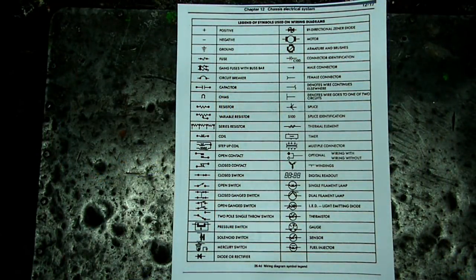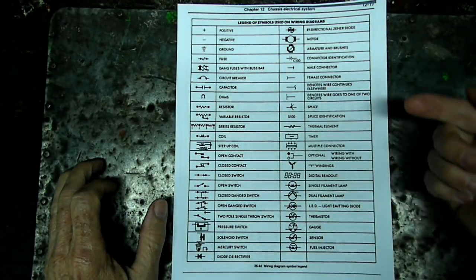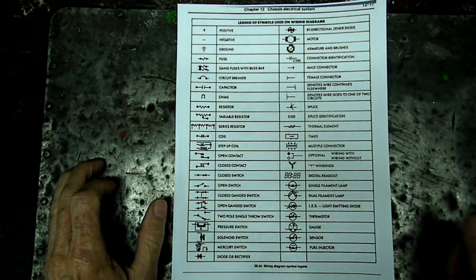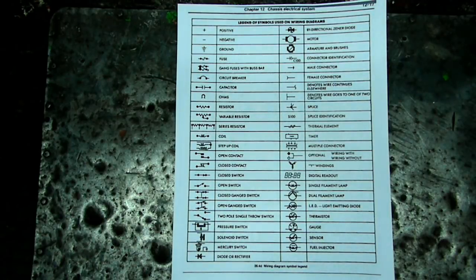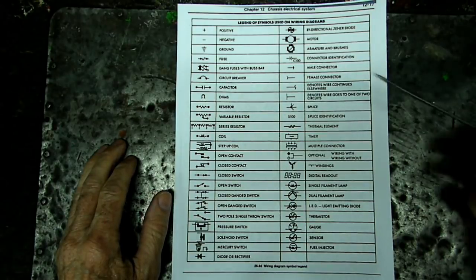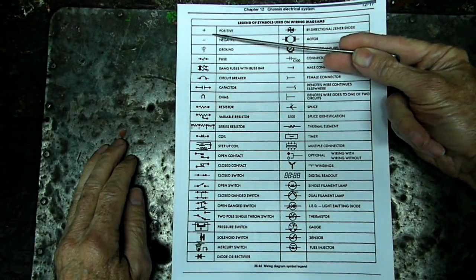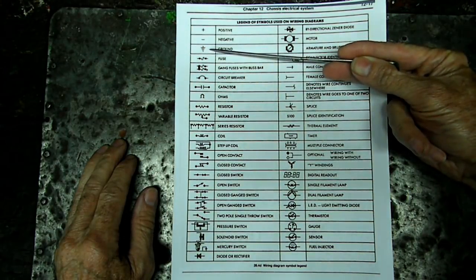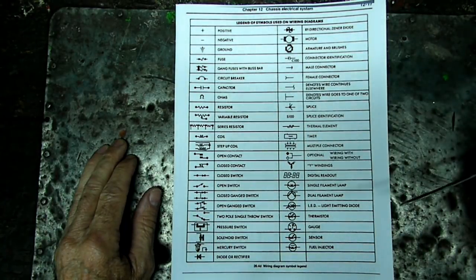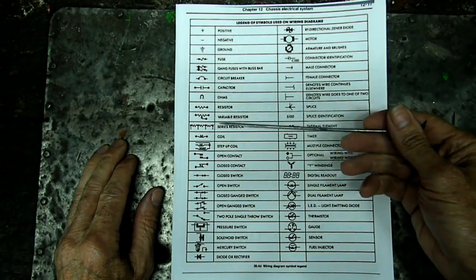Now the first thing to understanding the wiring diagrams is to know what the symbols mean. So it's best if you get a page with all the symbols on it so you know what is going on. One of the most common ones you'll see on a wiring diagram is your positive symbol, negative, here is the ground symbol, a fuse, your ohm symbol, resistor.